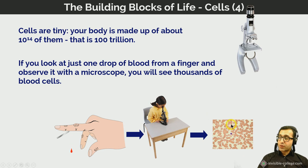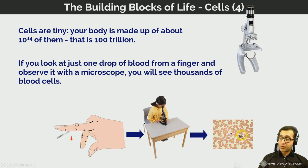This is a micrograph of a drop of blood as viewed under a microscope. Even in a very small proportion of the image we can see many blood cells — all of these are red blood cells, this is a white blood cell, and this is another white blood cell here.